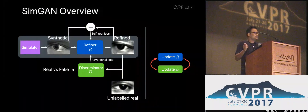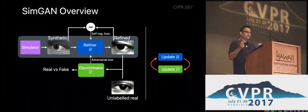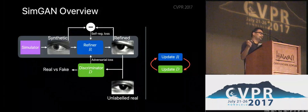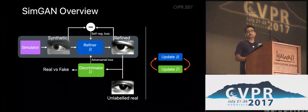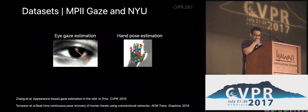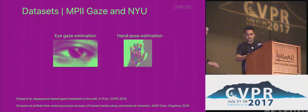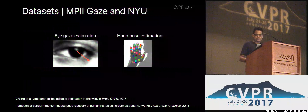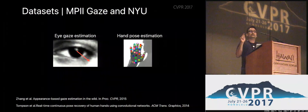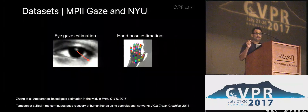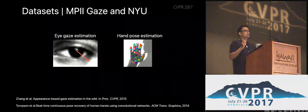At inference time, the simulator generates as many synthetic images as you like, and you pass those images through the refiner network, which refines them and produces realistic images that you can use to train your model. We focus on two tasks in this paper: eye gaze estimation, where the input is an image and the output is the gaze direction, and hand pose estimation, where the input is a hand depth image and the output is the joint locations on the hand.